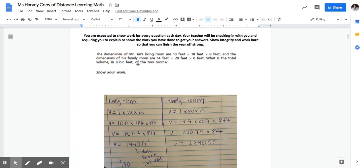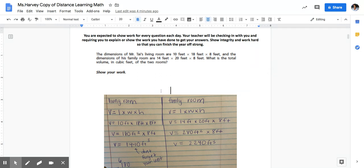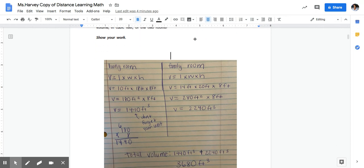So for today, the first problem that we're working on is this problem here: The dimensions of Mr. Tai's living room are 10 feet by 18 feet by 8 feet, and the dimensions of his family room are 14 feet by 20 feet by 8 feet. What is the total volume in cubic feet of the two rooms?